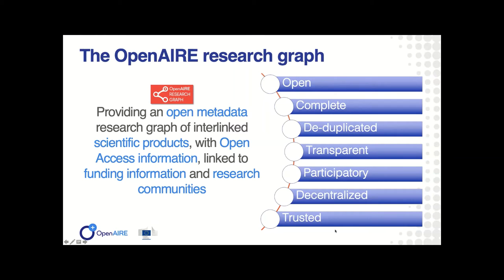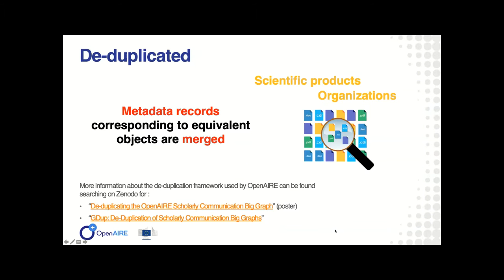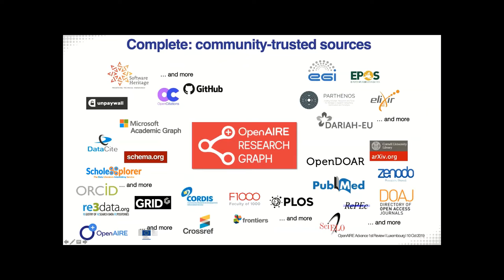So what is the OpenAIRE resource graph? It's about metadata and links between the objects described by that metadata. It contains information about open access, funding information, and research communities. Its properties are: open — we export it as CC0 as much as possible, though in some cases we must expose it as CC BY because some sources imply stricter copyrights. It's complete — we try to include all sources trusted by scientists, from Open Citations to Microsoft Academic, Crossref, ORCID, thematic repositories, data sources from research infrastructures, and publishers.